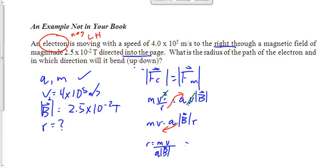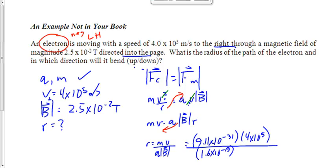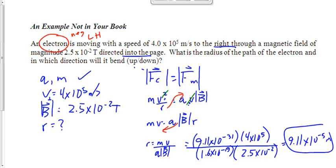Plugging in the mass of the electron times its speed, divided by the charge times the magnetic field of 2.5 times 10 to the minus 2, we get r = 9.11 times 10 to the minus 5 meters. Now, which way does it bend? Using the left-hand rule for the negative particle moving right in a field into the page — thumb right, fingers into page, palm toward the bottom — the electron bends toward the bottom of the page.